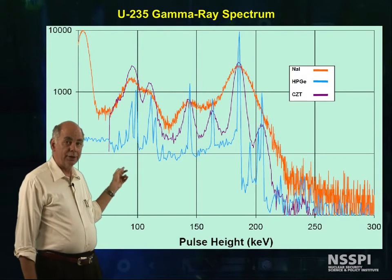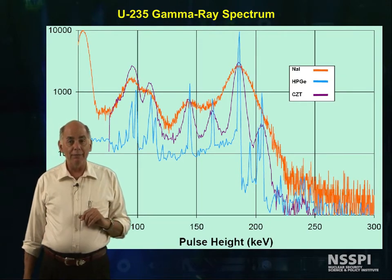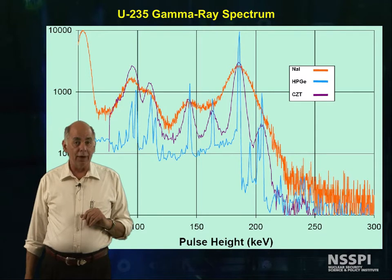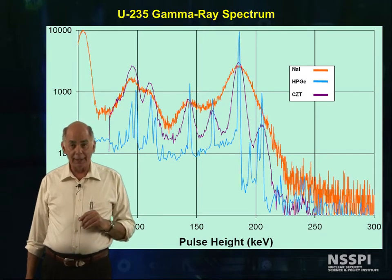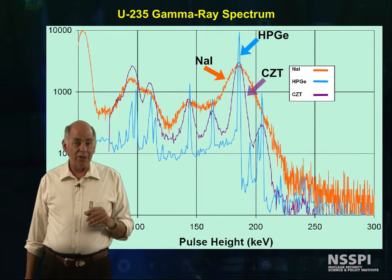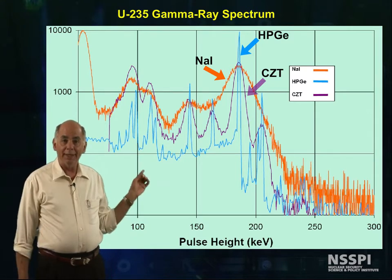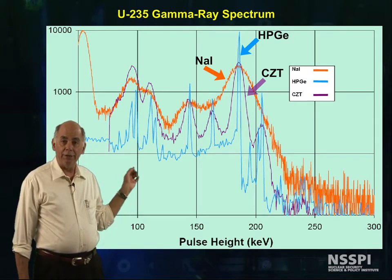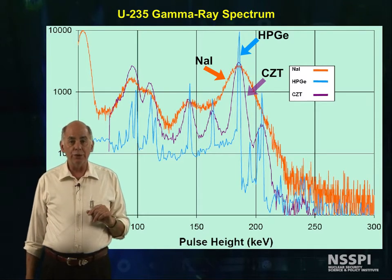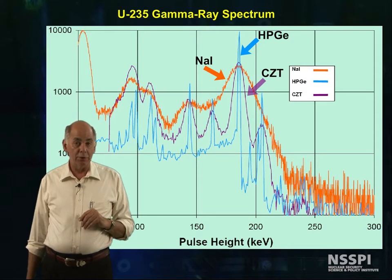Here's another example showing sodium iodide, high purity germanium, and cadmium zinc telluride, another type of semiconducting detector. The resolution of the cadmium zinc telluride is not as good as high purity germanium, but it's still far superior to sodium iodide. By looking at the three spectra, it's easy to understand that resolution is very useful in complex spectra like uranium and plutonium.